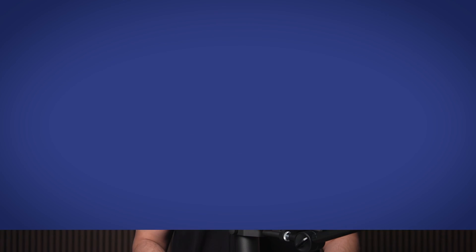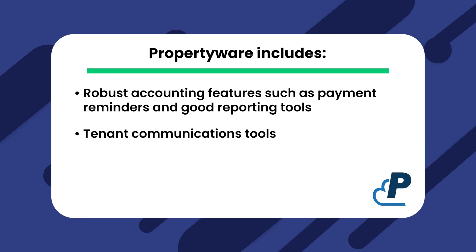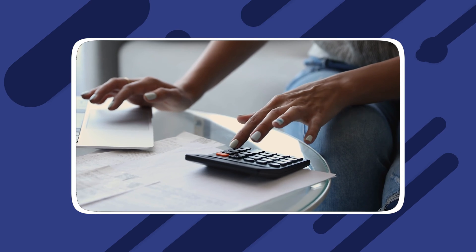Next up is PropertyWare, another strong alternative to AppFolio. PropertyWare has a great collection of comparable accounting features, including helpful automatic payment reminders. Similar to AppFolio, however, PropertyWare's price tag below 250 units is high. Its features include robust accounting with payment reminders and good reporting tools, tenant communication tools, maintenance management, and an owner portal. PropertyWare uses the per-unit per-month model with a monthly minimum of $250. Their basic plan is $1.00 per unit per month, and they also have an onboarding fee equal to two times your monthly payment — so if you're paying the $250 minimum, your onboarding fee will be $500.